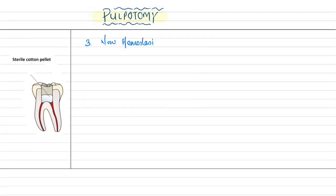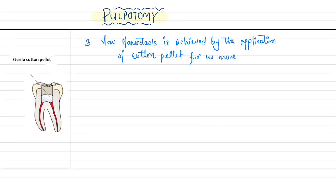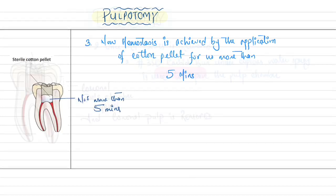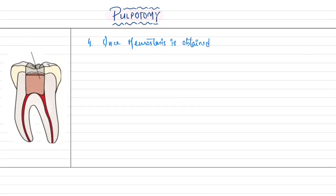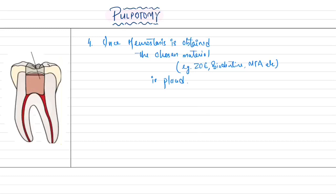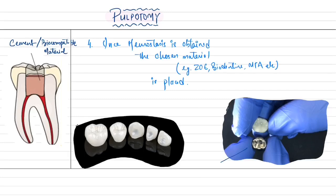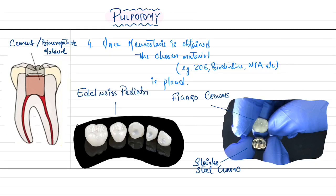The third step of pulpotomy is achieving hemostasis by the application of a cotton pellet for no more than 5 minutes. Once hemostasis is achieved, the fourth step is placement of the chosen pulpotomy material over the amputated coronal pulp. Finally, the tooth is restored with either a stainless steel crown, the newly introduced Figaro crowns, or Edelweiss pediatric dental crowns.